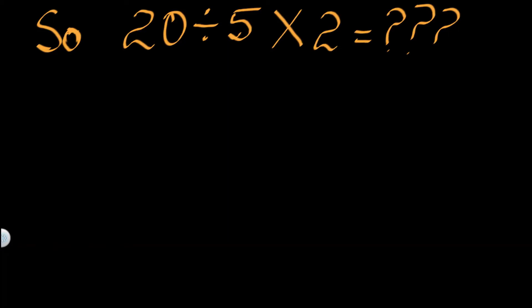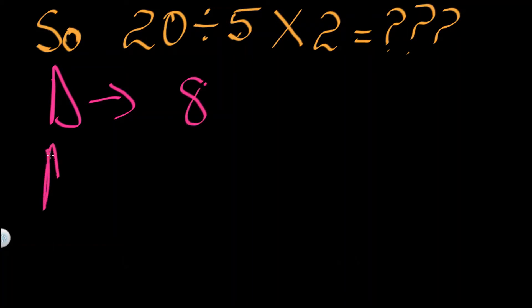Let me go to an example. If we have 20 divided by 5 times 2: if we start with division, we say 20 divided by 5, which gives 4, and we multiply by 2 to get 8. Yet if we start with multiplication, we say 5 times 2, which gives 10, and then we go to division: 20 divided by 10 gives 2.